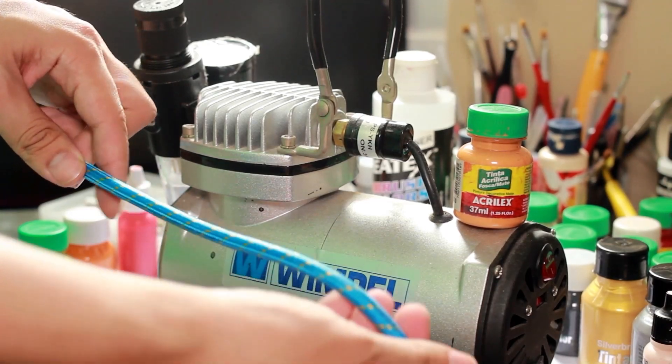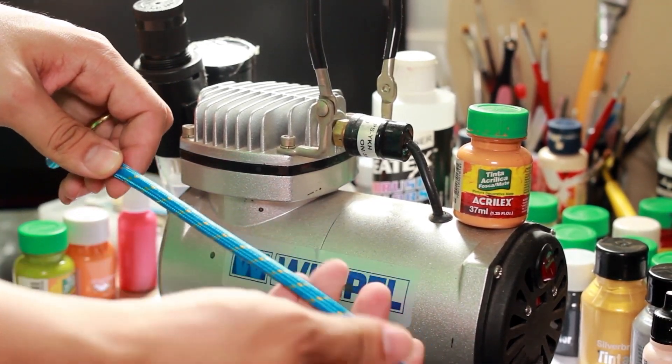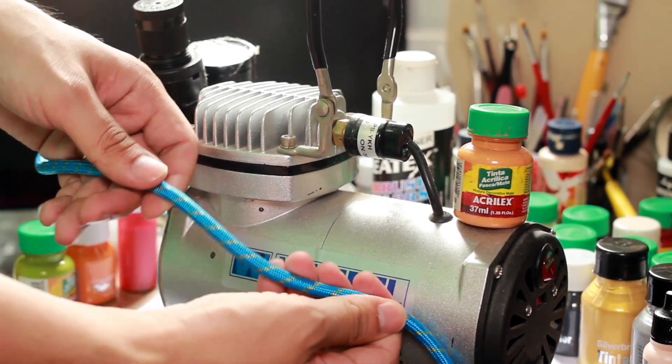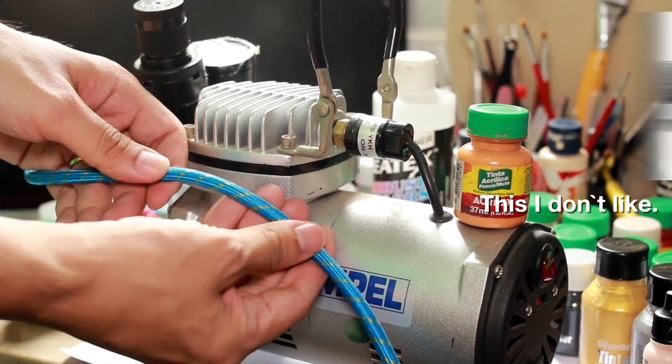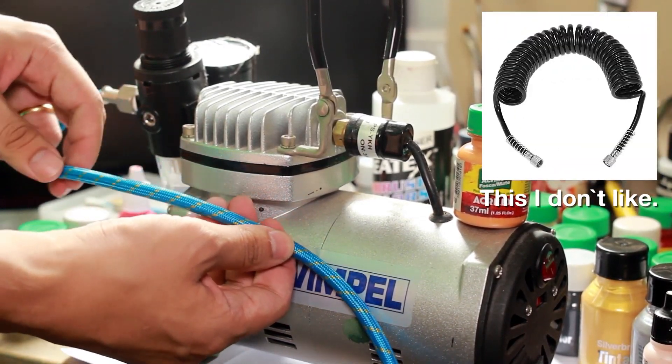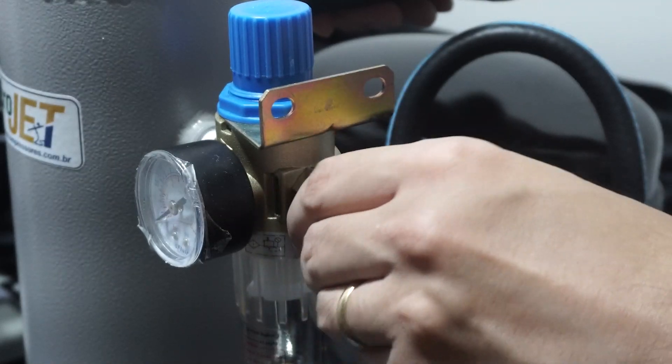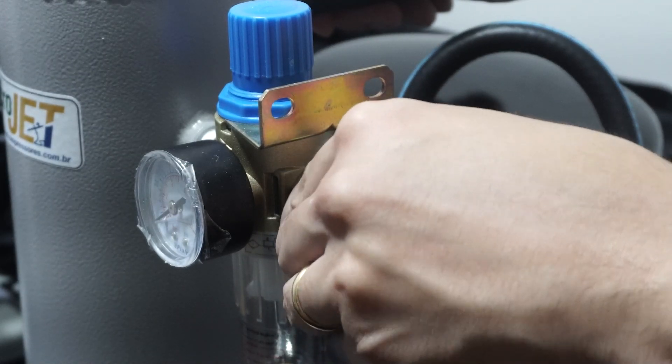Between your compressor and your airbrush there is a hose. There are two basic types. My preferred one is this one because it seems more durable. But the other one will also work just fine. You just plug the hose on both compressor and the airbrush and you're good to go.